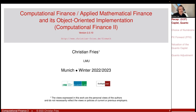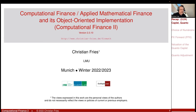I believe that maybe this is a point why one should start discussing financial mathematics with interest rates anyway. Because your numeraire is an interest rate product, maybe it's not so good to first see the Black-Scholes model.